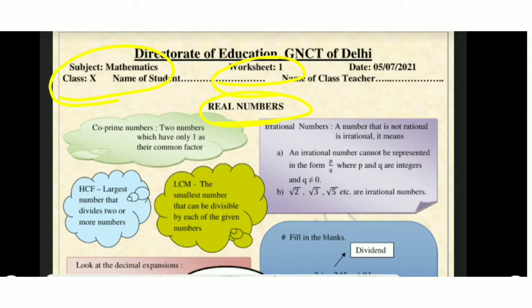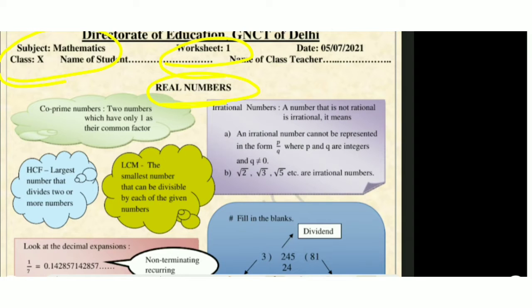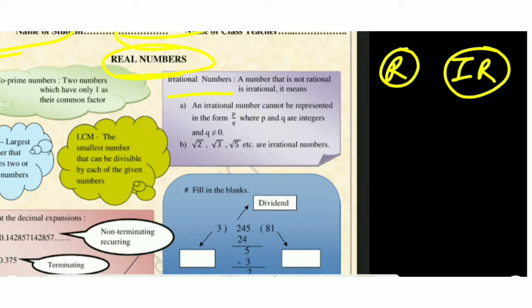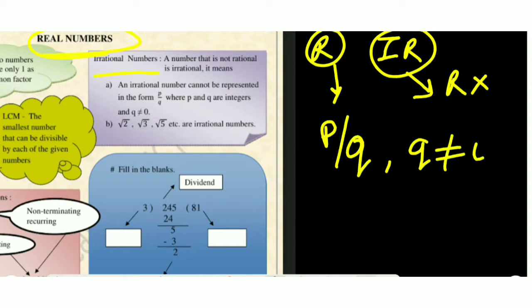Real numbers are the combination of rational numbers and irrational numbers. Rational numbers can be represented in the form of p/q — that means numerator upon denominator — where q must not be equal to 0. Numbers that cannot be represented in this form are called irrational numbers.